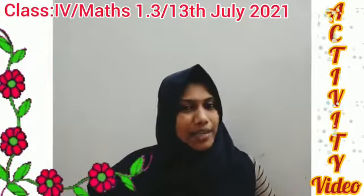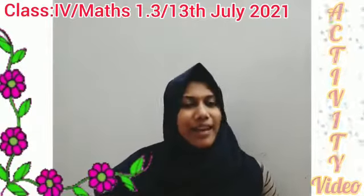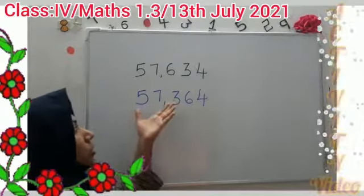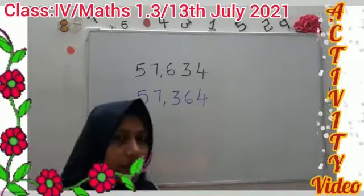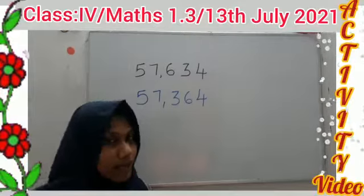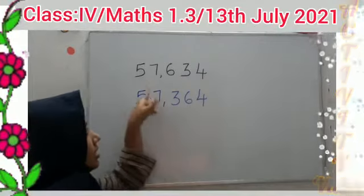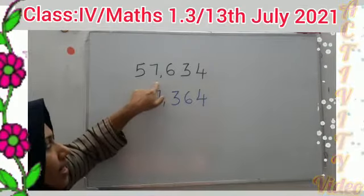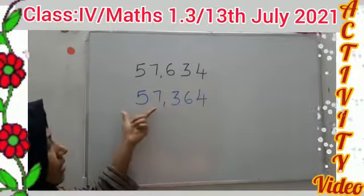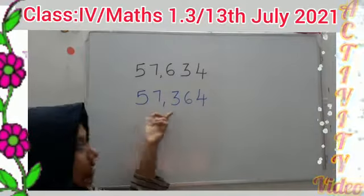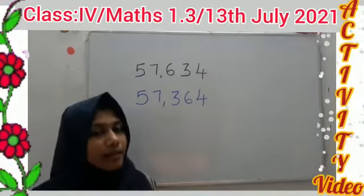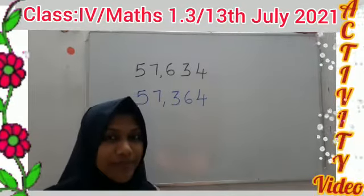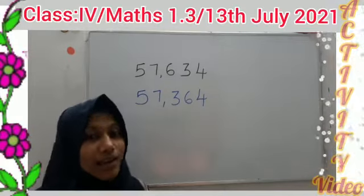You already studied about comparison, so we can check together how we can compare numbers. Ready? My dear students, you have two numbers here. How can we read these numbers? According to the place value system, this is the 10,000 place. So, 57,634 and 57,364. How can we compare these numbers? First of all, we should count the digits.